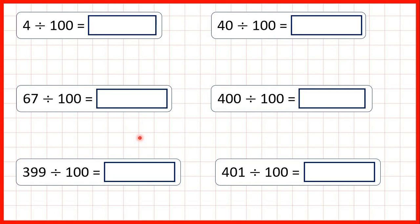For these questions we're dividing whole numbers by a hundred, but except for 400, the dividends are not multiples of a hundred — they're not numbers in the 100 times table. That means we're going to get decimals as our answers. First we have 4 divided by 100.